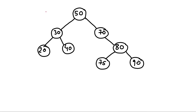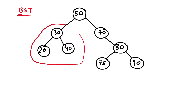First, let's see what is a binary search tree. It's a binary tree, as the name says, and there is a property that every node in the left subtree of any node is smaller than that node. For example, if we see node 50, it will have two subtrees, and all the nodes in the left part will have a value less than 50.